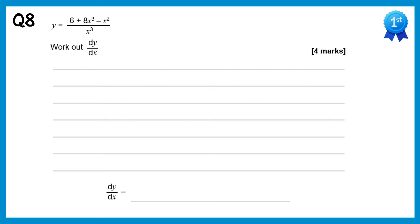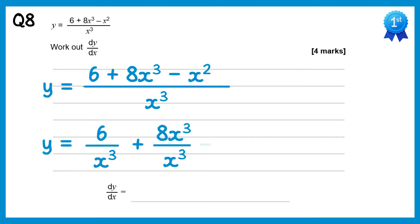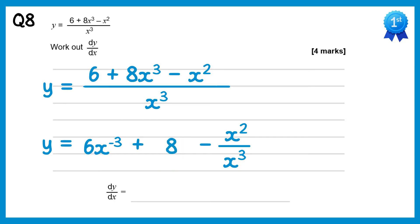For this question we'll separate it into fractions: 6 over x cubed plus 8x cubed over x cubed minus x squared over x cubed. The first one is rewritten using the negative index rule as 6x to the negative 3. The next one — the x cubes cancel — giving just plus 8. The final one, x squared divided by x cubed, is x to the power negative 1. Now we differentiate: negative 3 times 6 is negative 18, giving x to the power negative 4. The constant 8 disappears, and negative 1 times negative 1 is positive 1, giving plus x to the power negative 2.